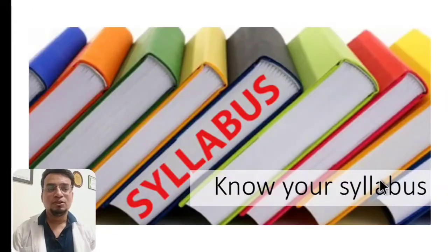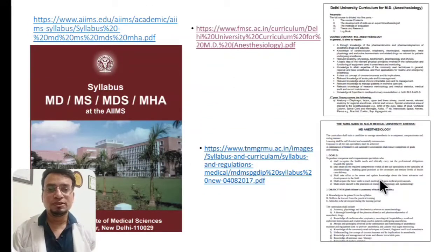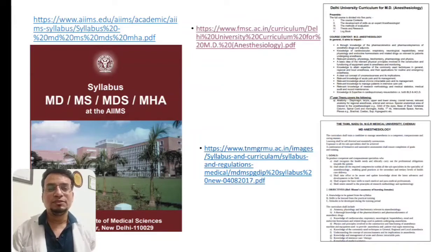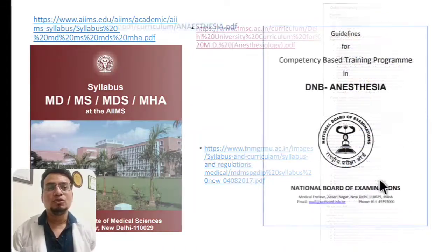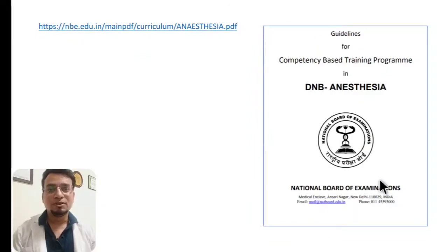Know your syllabus well before you start. Whatever college, university, or hospital you are in during your DNB anesthesiology — the first and foremost thing is to know the syllabus. It is available on the websites of your university. Go there and download it. What the examination authorities expect from you is already formulated in that syllabus. Whether it be MD or DNB syllabus, download it, keep it in your pen drive, and read it again and again — even print it and keep it on your bookshelf.